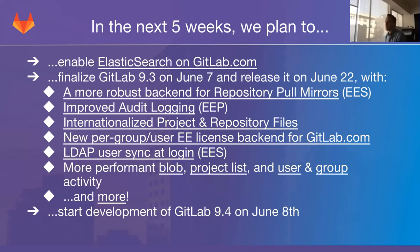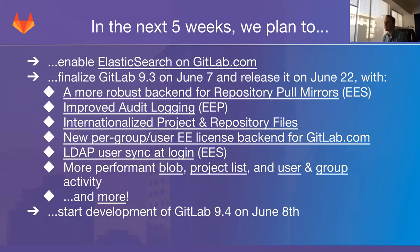The fourth thing is a new per-group per-user EE license backend for GitLab.com. This matters for GitLab.com customers, not on-premises users. We will be selling bronze, silver, and gold plans where users can buy Enterprise Edition Starter and Enterprise Edition Premium features per group on a monthly fee basis, giving that group and all its projects access to features like file locks.